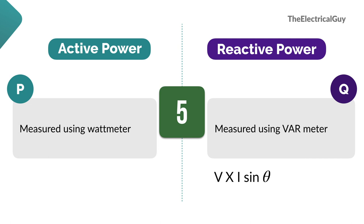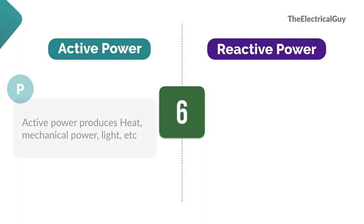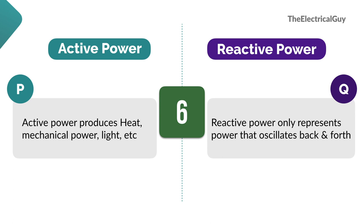If voltage and current are in phase, no reading will be obtained on the VAR meter. Active power produces heat, mechanical power, light, etc. Reactive power represents power that oscillates back and forth; however, devices like transformers and induction motors use reactive power to produce an AC magnetic field.